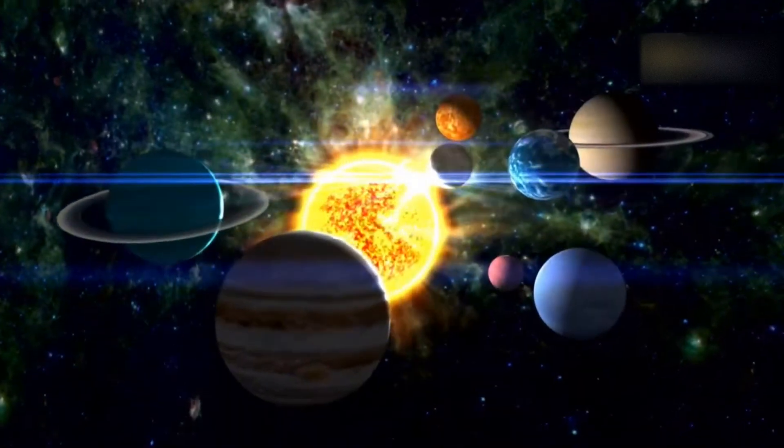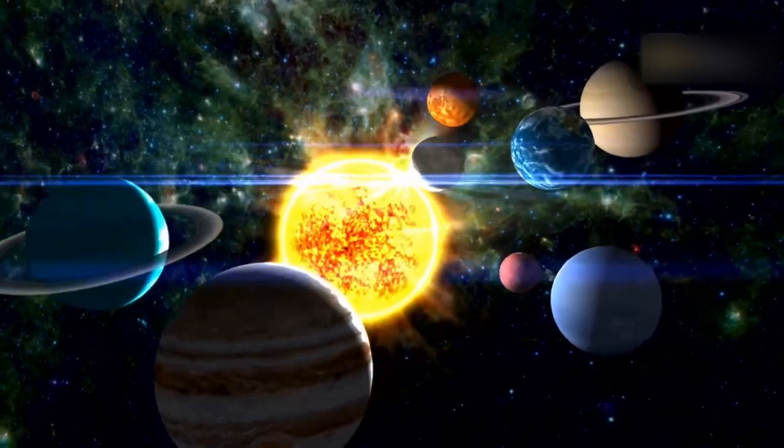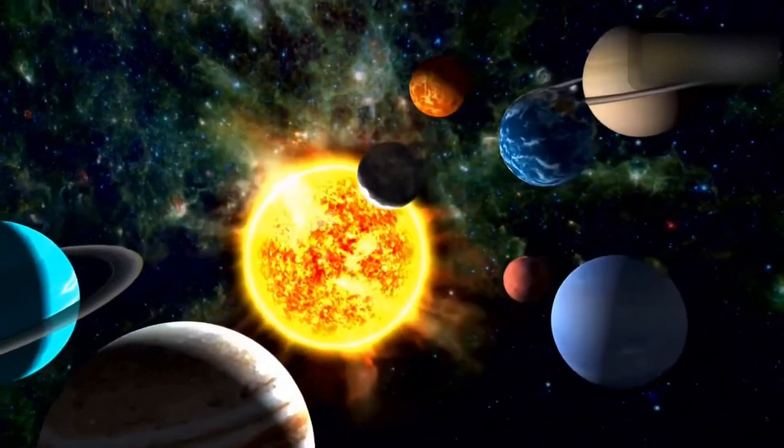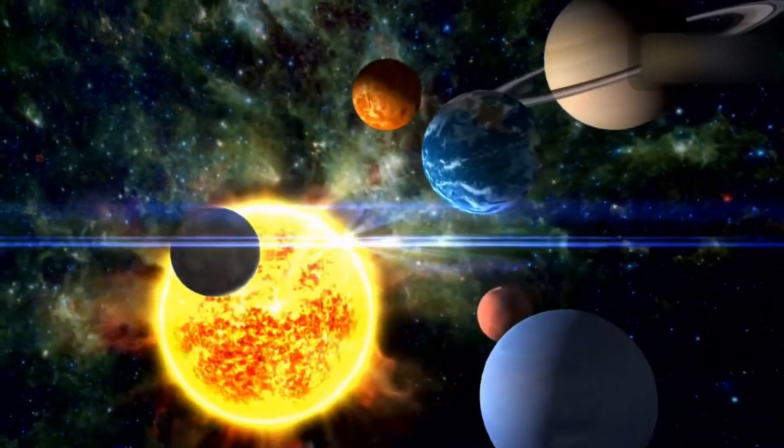Six of Earth's neighboring planets will briefly appear in the sky on the same night. Seeing a few planets visible in the sky isn't necessarily rare.